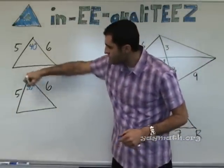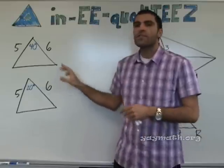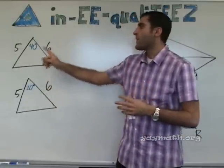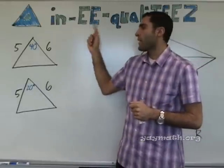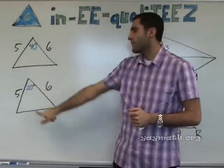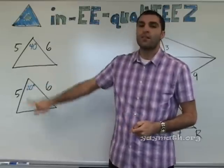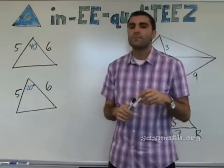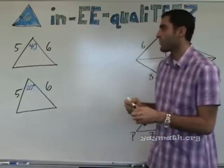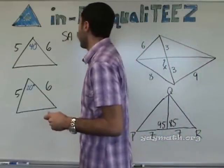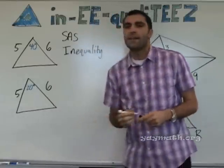Here's the question. Here we have a 5 that's the same as the 5, a 6 that's the same as the 6, so it's starting to look like the triangles may be congruent. But then the angle between them is different. Which side is longer — the top one or the bottom? The top one, because the angle opposite it is bigger. And that's the first of two rules we're doing today. It's called the SAS Inequality.